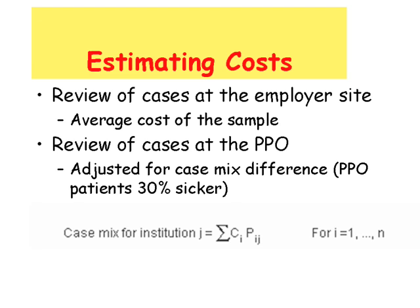Next we have to estimate the cost of various events. We reviewed the cases at the employer side and calculated the average cost of hospitalization and outpatient visits. We also reviewed the cases at the PPO side, making sure we had patients similar to the employees at the employer side. We adjusted the case mix between the PPO and the employer side, and this case mix difference showed that the PPO side had 30% sicker patients than the employer side.